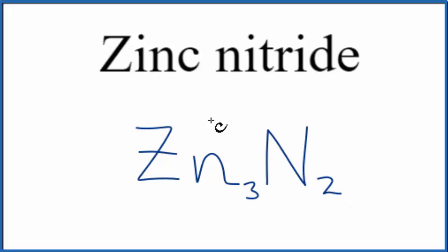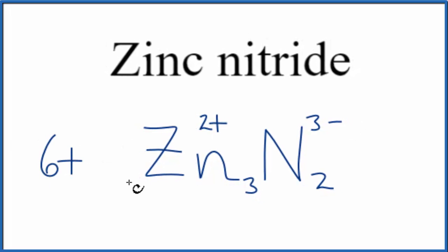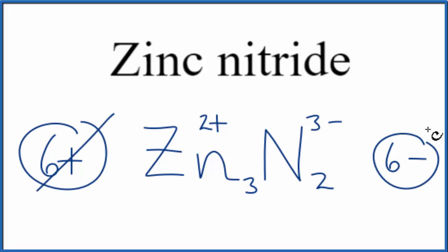And we can check our work. We said zinc was 2+ and the nitride ion, 3-. 3 times 2+ is 6+. 2 times 3- is 6-. So 6+ and 6-, they add up to zero, cancel out, give us a net charge of zero.